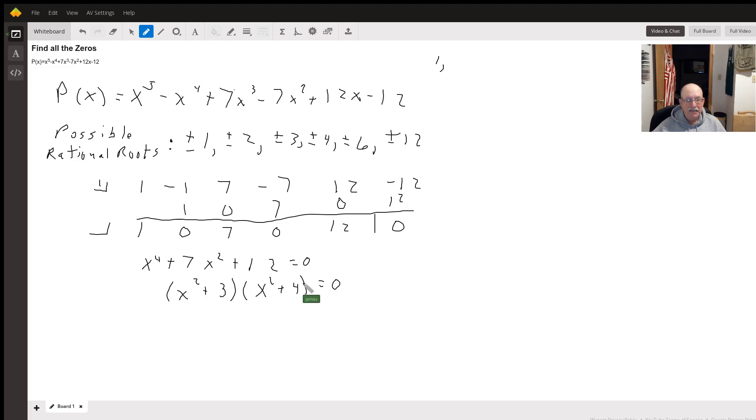Okay, I set those factors equal to 0. So we get x squared equals negative 3. That means x equals plus or minus square root of negative 3, which is x equals plus or minus i square root of 3. Then we do x squared plus 4 equals 0, and I get x squared equals negative 4. x will equal plus or minus the square root of negative 4, x equals plus or minus 2i.